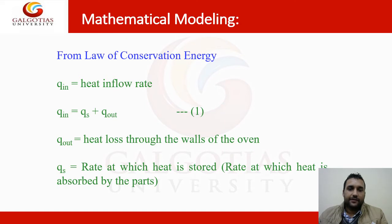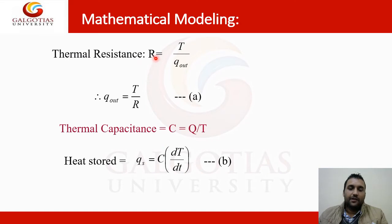From the law of the conservation of energy, the Q_in, that is heat inflow rate, is equal to Q_s plus Q_out. Q_s is the rate at which the heat is stored or rate at which the heat is being absorbed. Q_out is the heat loss through the wall of Oven. The thermal resistance R is equal to T upon Q_out. The Q_out or heat loss in this case is equal to T divided by R, the thermal resistance. The thermal capacitance in this case is equal to Q upon T, capital Q upon T. Heat stored is equal to Q_s, that is heat stored is equal to thermal capacitance into change of temperature with respect to time.